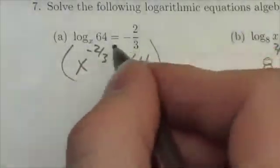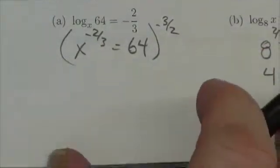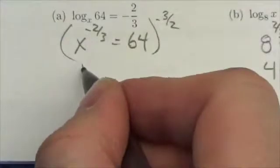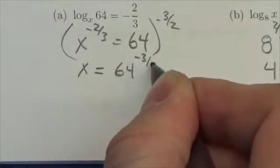All I really need to do here is take both sides to the negative three-halves. So now on our variable that'll just end up being x. This becomes 64 to the negative three-halves.